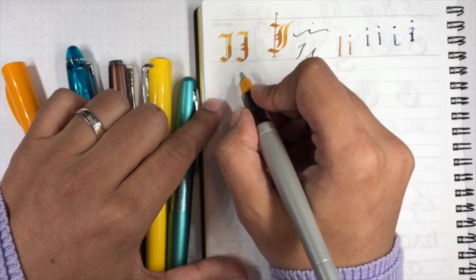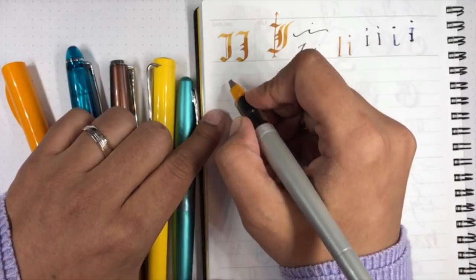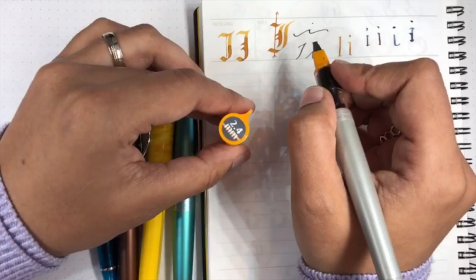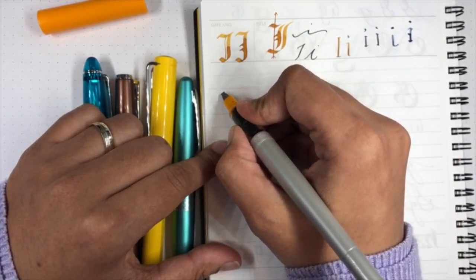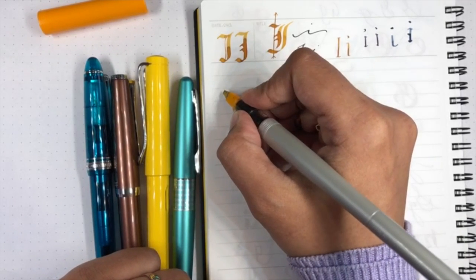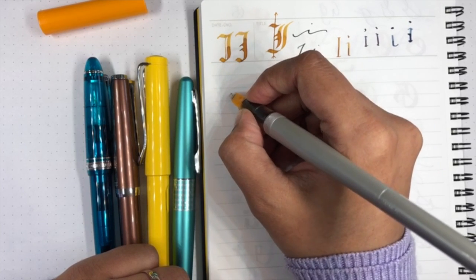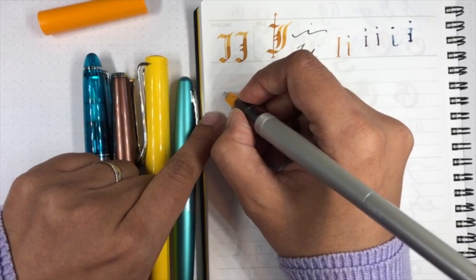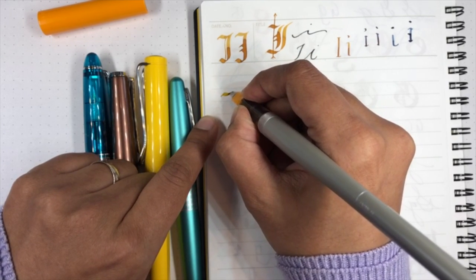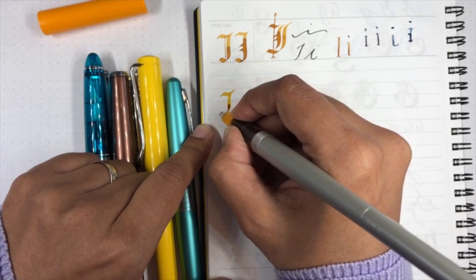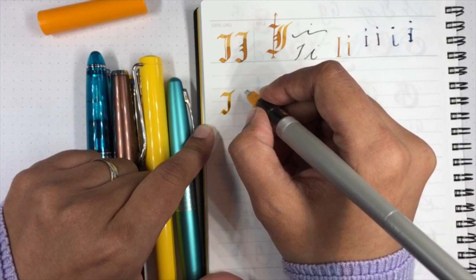As usual I'm using my trusty pilot parallel 2.4 millimeter. I keep the nib at an angle, it really depends on the size of your nib. Some people use a sharper angle but I'm gonna go with this one. Instead of rambling forever I'm just gonna draw it: give it a tail, bring it down, give it a small butt swoosh.